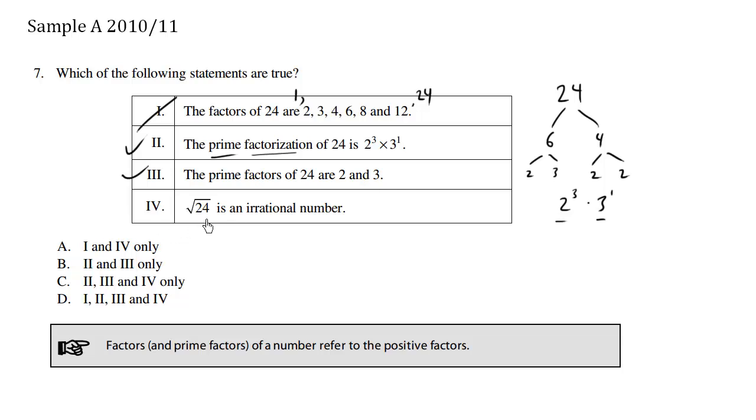Choice number 4. So the square root of 24 is an irrational number. Well, we know that the square root of 9 equals 3. And 3 is not irrational. So we need to do a little test here. How do we know that this doesn't simplify to a simple number, natural number?